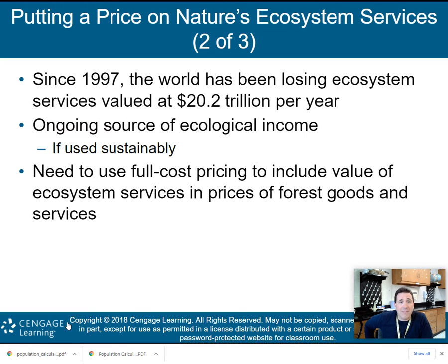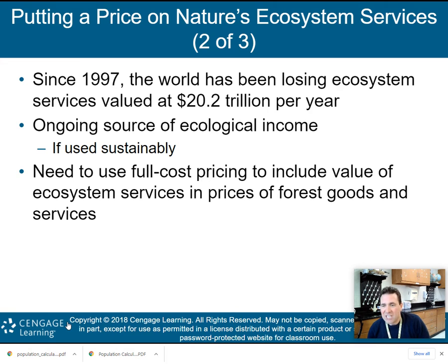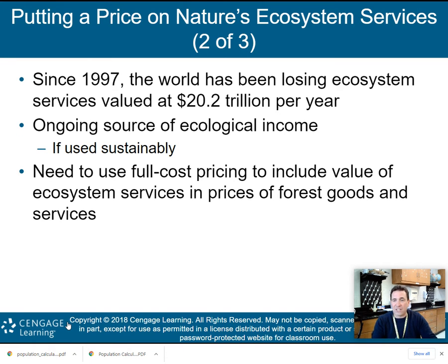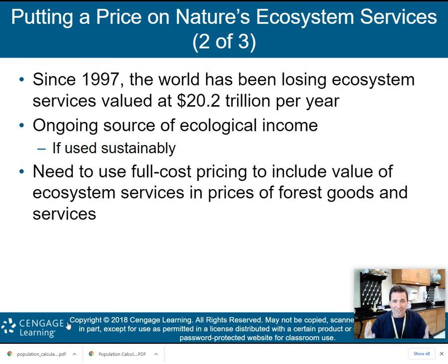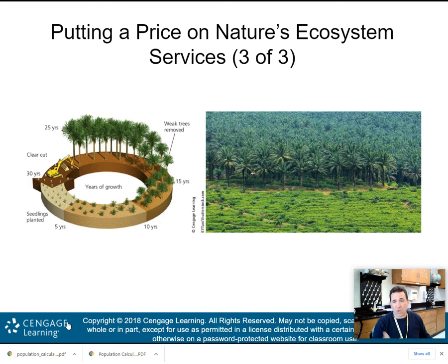We need to use full cost pricing — which we've talked about in previous chapters — to include the value of ecosystem services in the prices of forest goods. If you sell timber, you have to factor in not only the cost to harvest and transport it, but also the ecosystem service that tree provided. When you factor in that value, the price of timber goes up, which hopefully curbs the amount of timber people use.